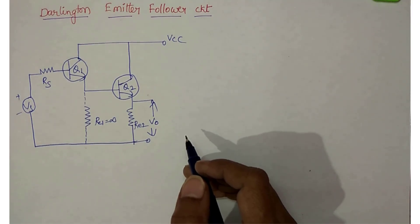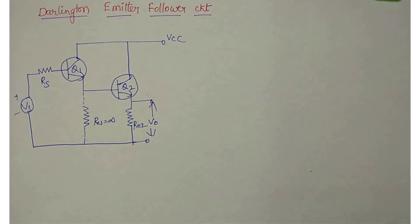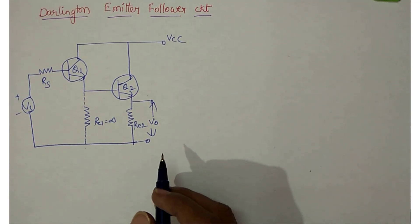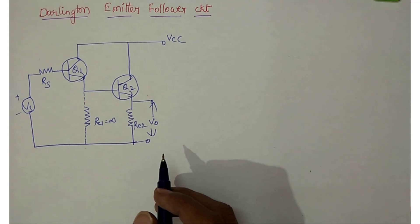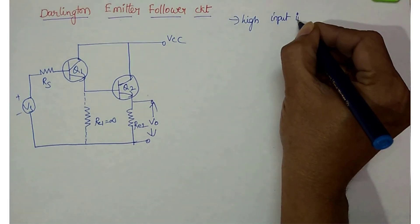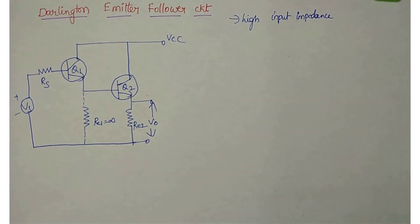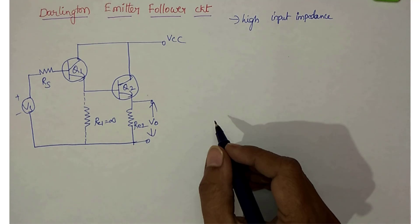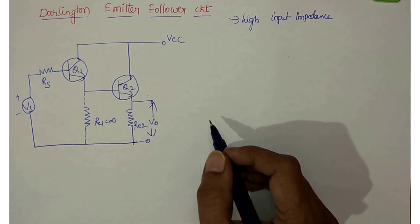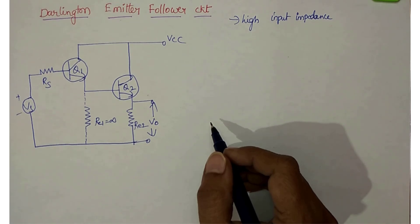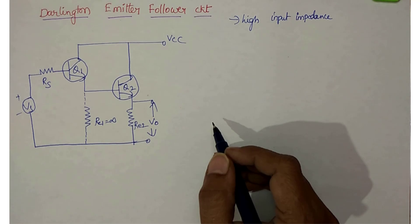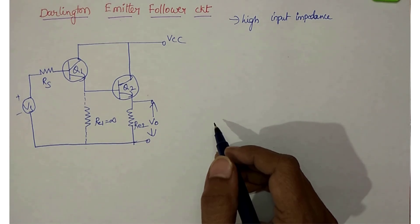Hello everyone. In this class I want to explain about the Darlington emitter follower. In the last video I explained about the Darlington pair, which has more current gain and high power handling capability. This Darlington emitter follower circuit has high input impedance — greater than the common collector amplifier. High input impedance circuits are used for impedance matching and also for noise reduction.